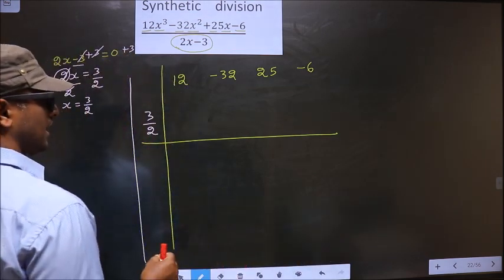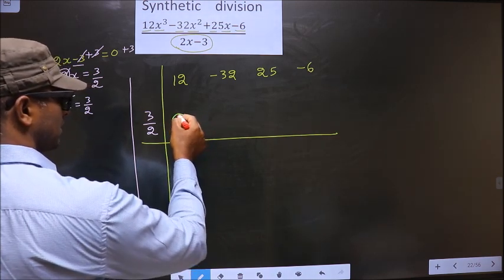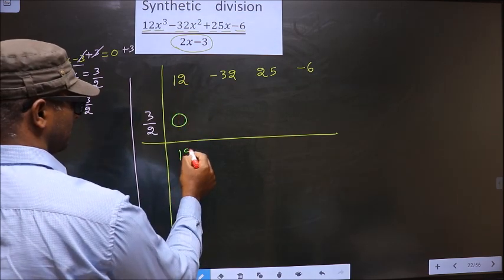Now we should start by placing 0 here. So you put 0 here. Now add these 2. 12 plus 0, 12.